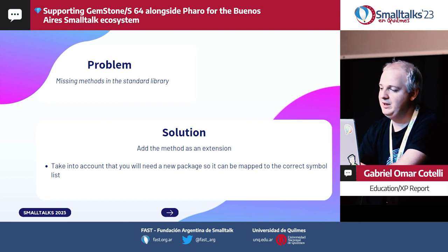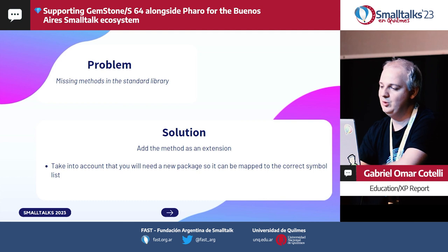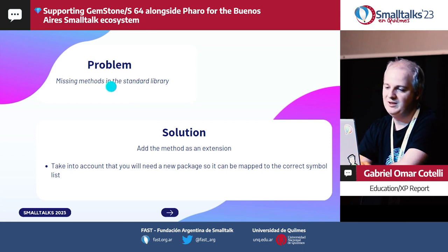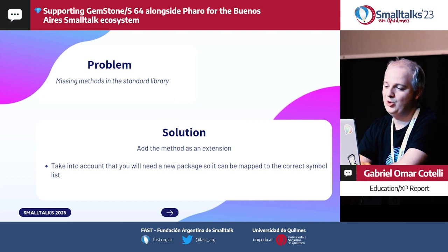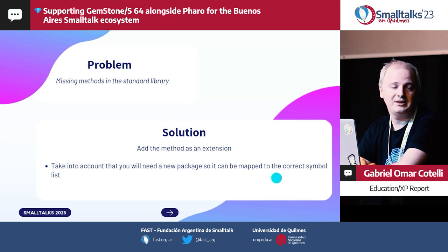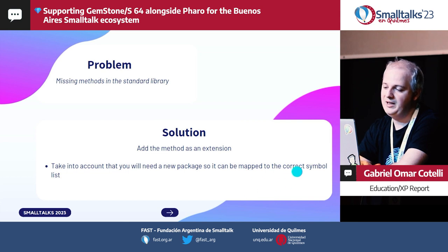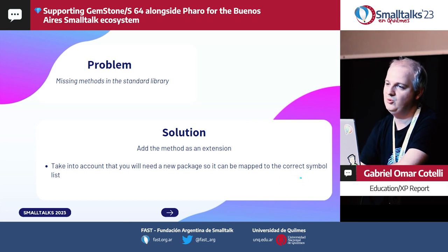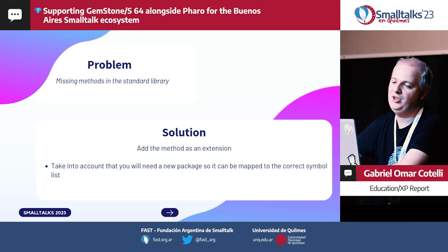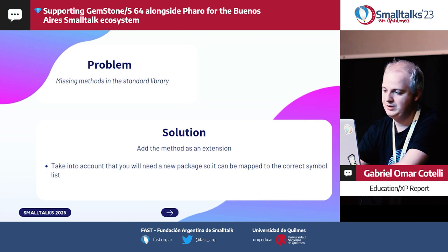The first class of problems we hit were the easier ones to fix, because they make a test fail with an error and you get a debugger in front of you. The problem is usually straightforward: the standard libraries are not the same across Smalltalks, and you may be using a method that is missing in the standard library of the other Smalltalk. The solution is simple — just add the method as an extension. The only thing to take into account is that if you're extending a base class already present in another package, you'll need a new package and tell the method to go to the symbol dictionary where the original class is defined, not the symbol dictionary from your project.